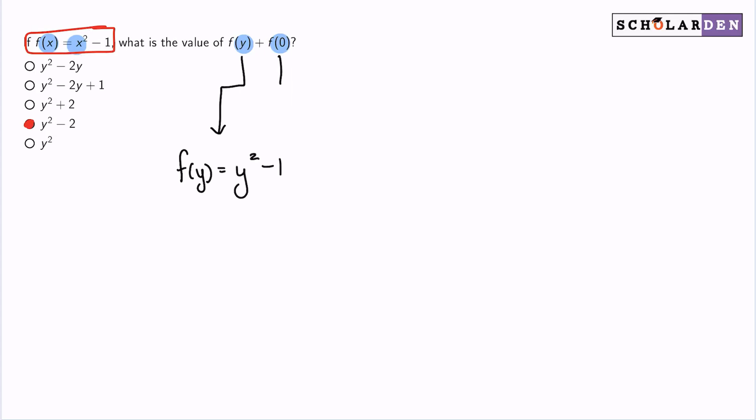And f of zero, same thing. We will replace every x that we see with zero. So instead of x squared minus one, it'll be zero squared minus one, which gives us negative one.